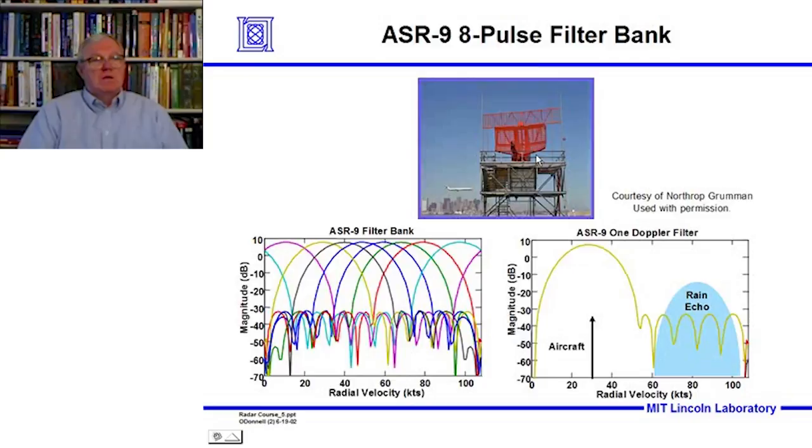Here is the picture of the airport surveillance radar. This particular one is located in Boston. I'm pretty sure that looks like the Boston skyline to me. So this would be the ASR-9 at Logan Airport. And here's a picture of the overlapping filters in the ASR-9. After the MTD was tested as a prototype at Burlington, Vermont, its characteristics were put into the specifications for the FAA's ASR-9 procurement.